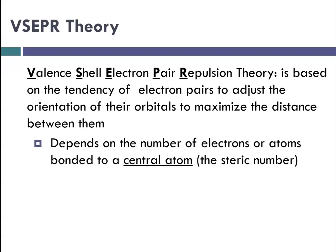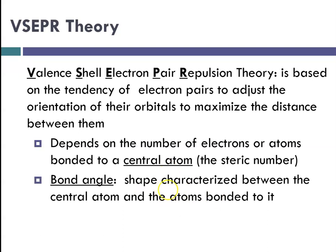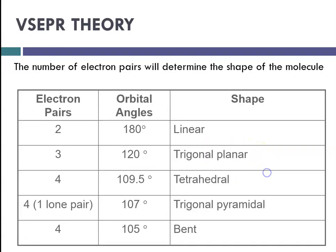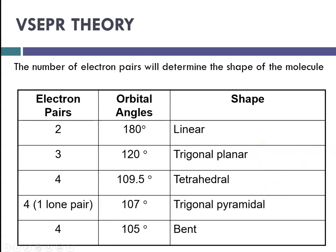VSEPR depends on the number of electrons or atoms bonded around a central atom, and that gives you something called a steric number. When we get to the chart that helps you with VSEPR shapes, you'll see what I mean. The bond angle that results is the shape characterized between the central atom and the atoms that are bonded to it. So the number of electron pairs will determine the shape of the molecule.